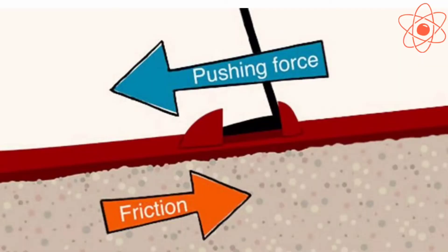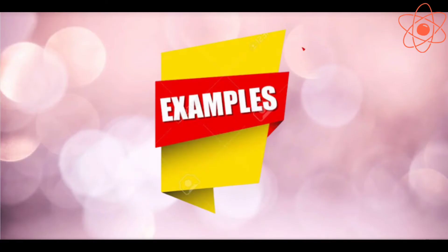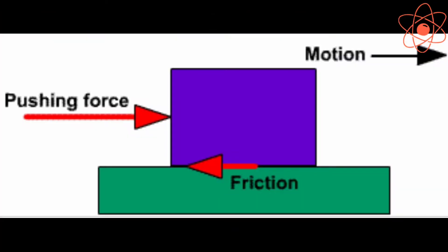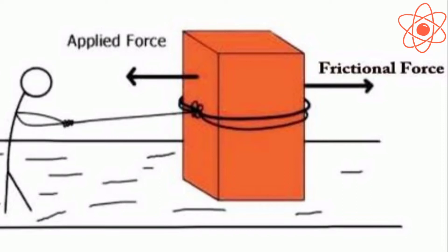Friction always opposes the relative motion between the two bodies in contact, irrespective of the direction of motion. For example, when a block is pulled by force towards the right, the force of friction acts towards the left, and when the block is pulled by force towards the left, the force of friction acts towards the right.